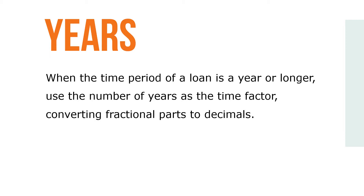When the time period of a loan is a year or longer, use the number of years as the time factor, converting fractional parts to decimals. For example, the time factor for a two-year loan is two, for three years is three, for one and a half years is one point five, and so on.